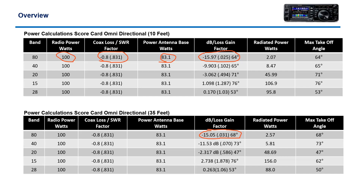If you have the antenna for 15 meter, the game changes completely. On 15 meters, we actually pick up some gain. At 10 feet, we're running about 1 to 1.1 gain — not a whole lot. But check this out: on 15 meter at 35 feet up in the air, we're almost getting about 3 dB gain, which is going to roughly almost double the power.